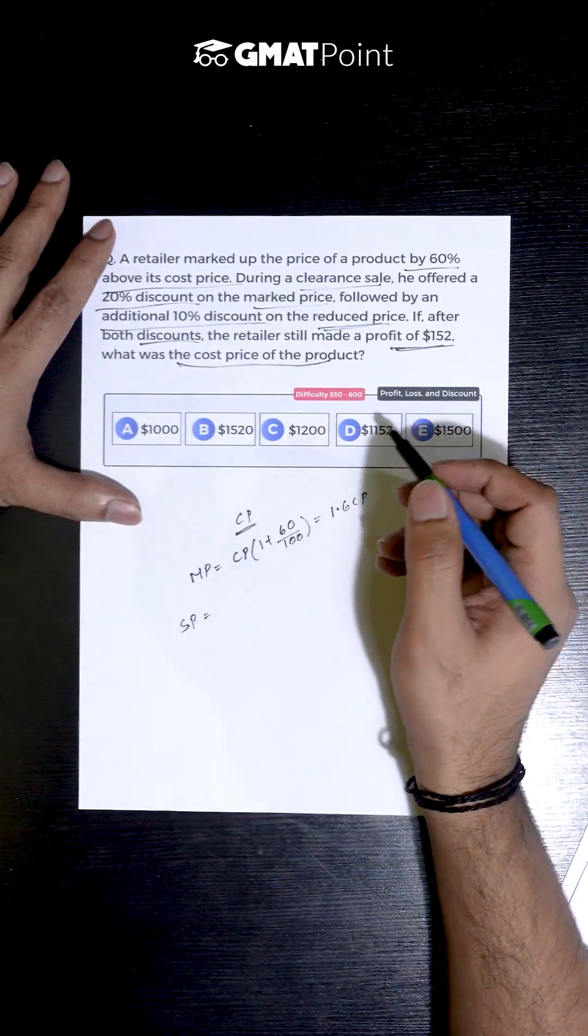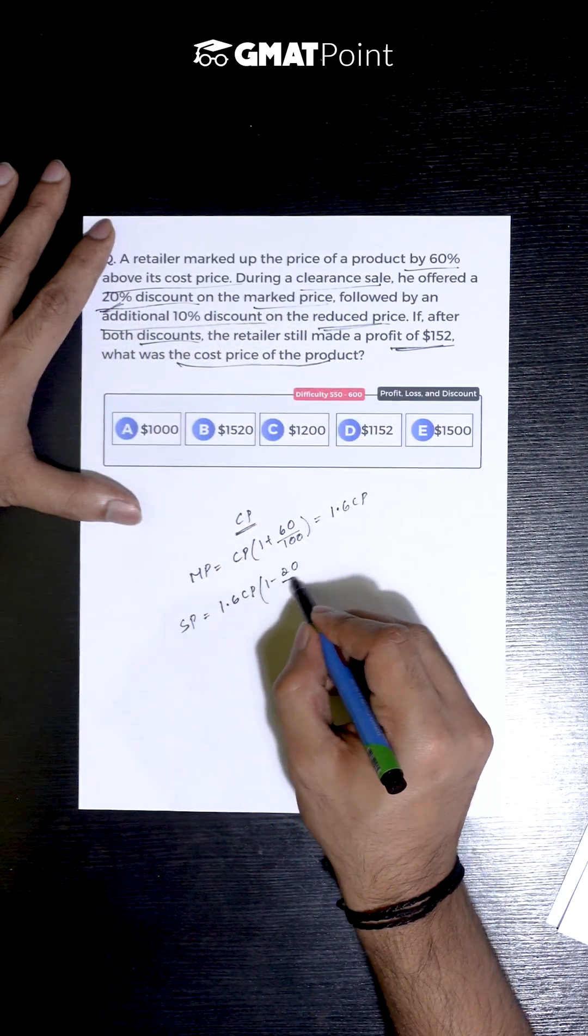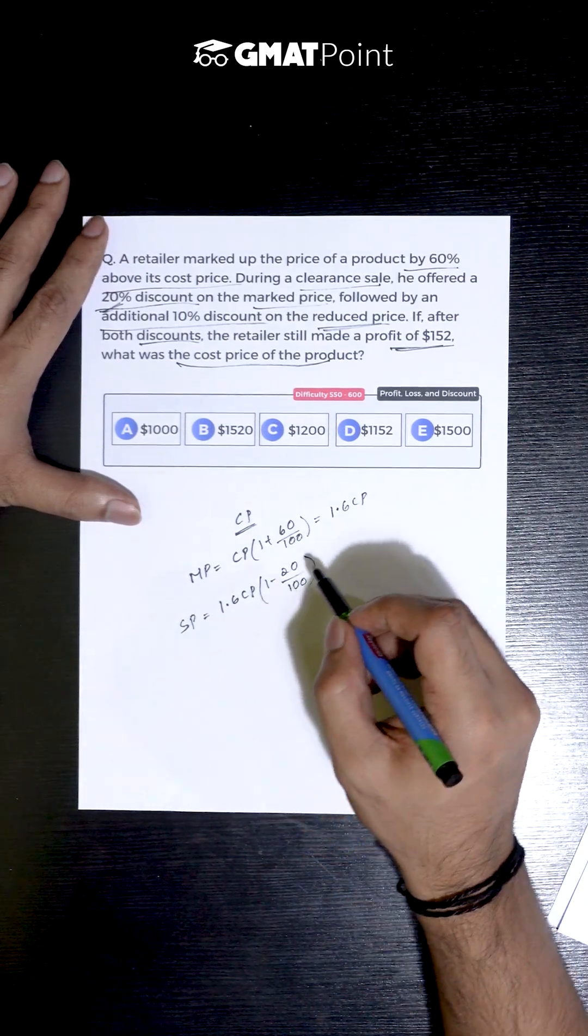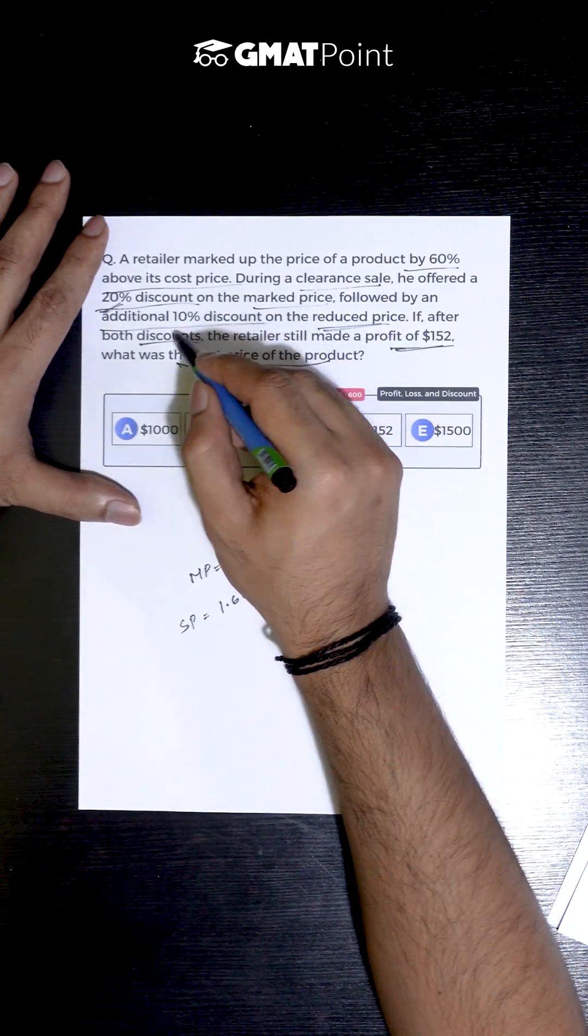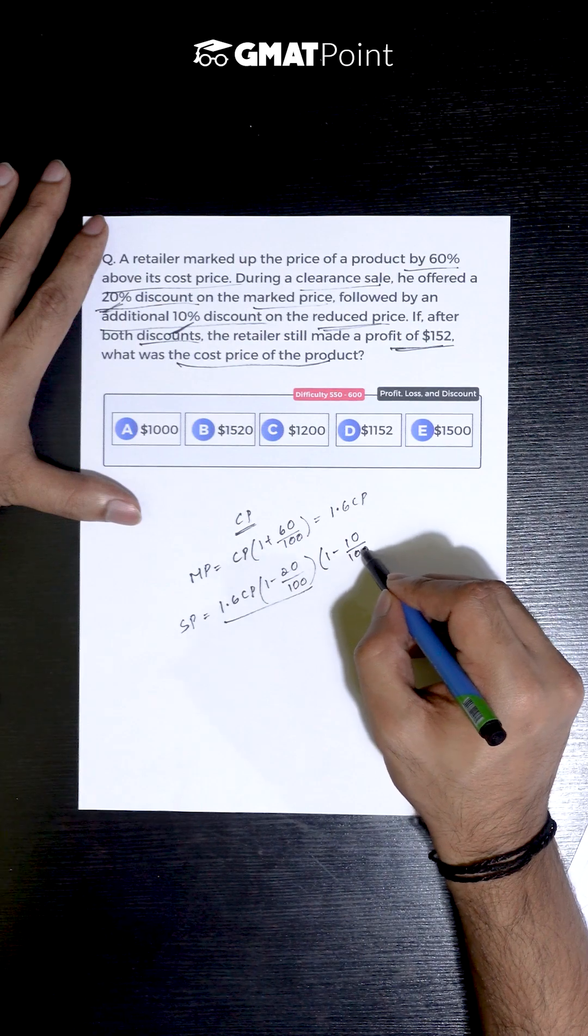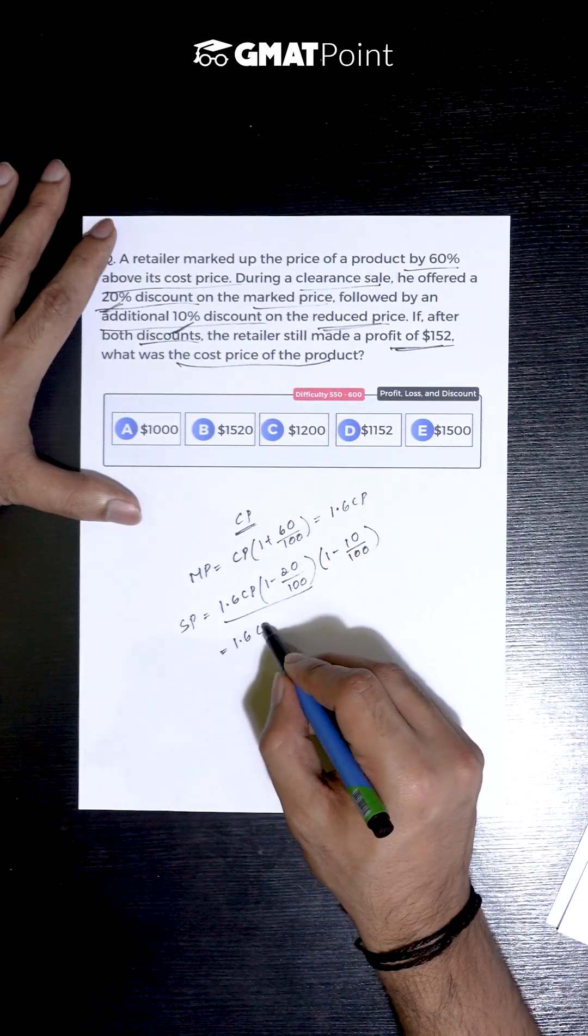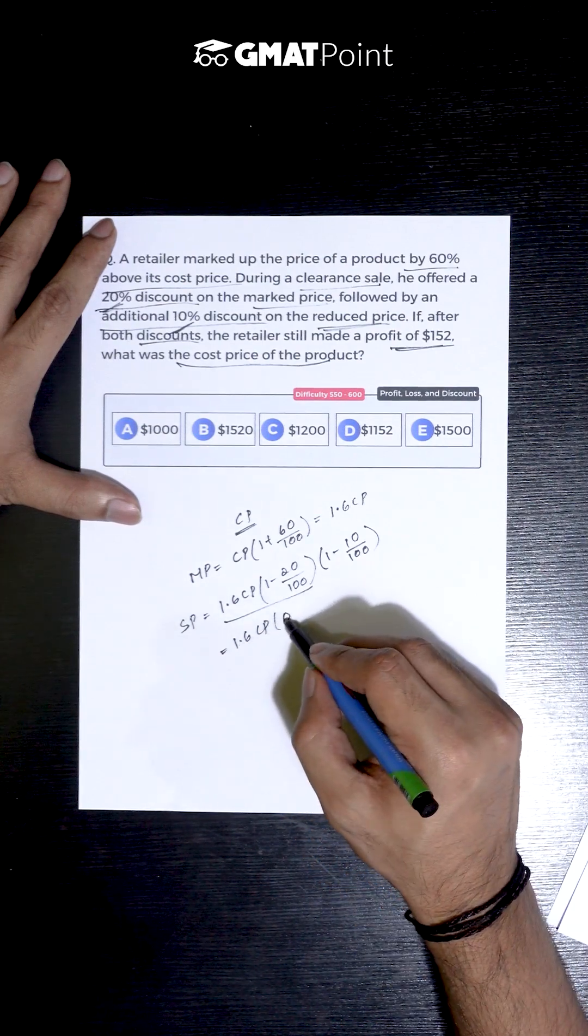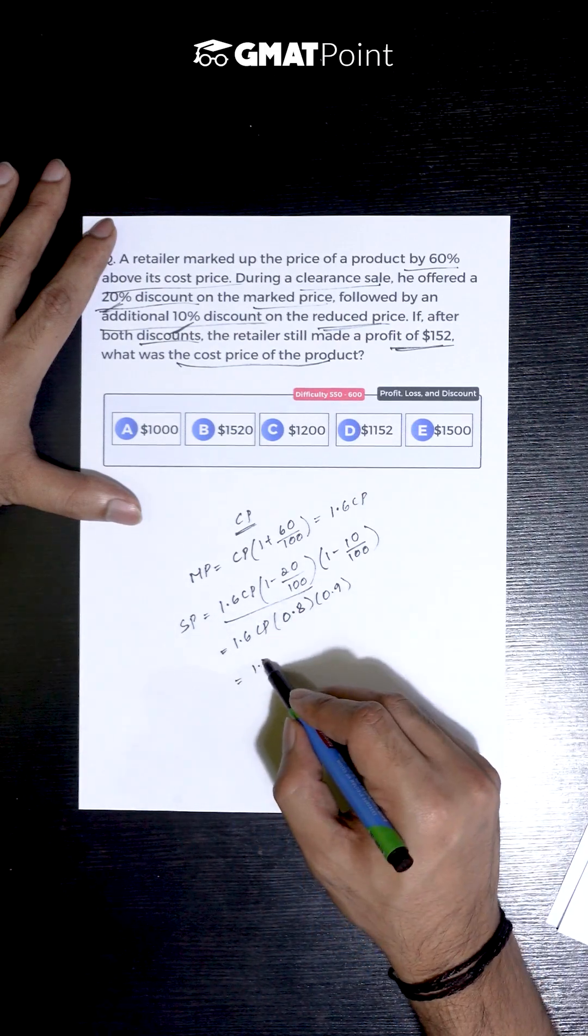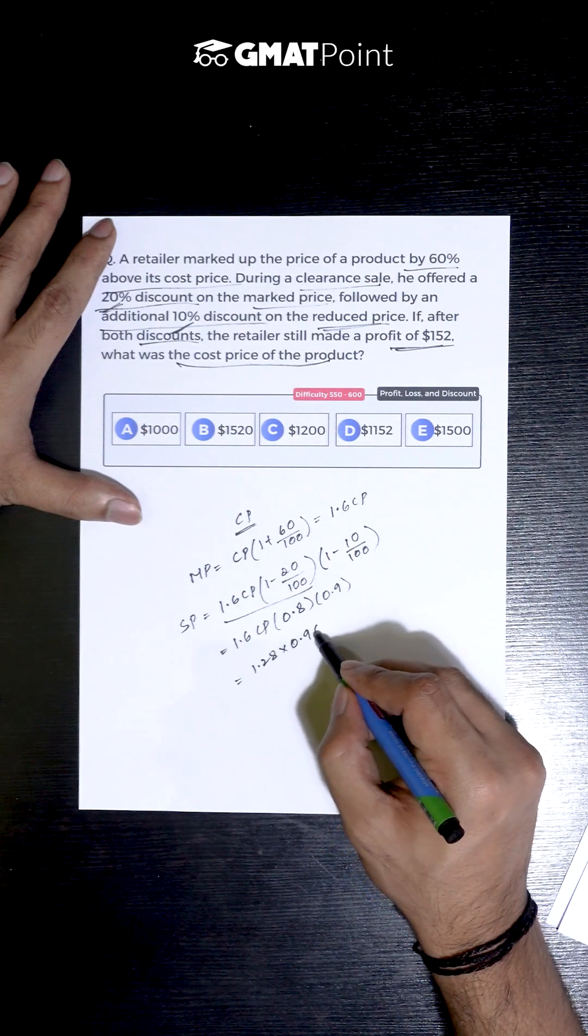Now, during the clearance sale, we are told that he first gave a discount of 20%. Then the selling price becomes 1.6 CP, which is the marked price, times 1 minus 20 by 100. And again, an additional discount of 10% is given on this value. So the final selling price can be calculated by multiplying this value with 1 minus 10 by 100. So the final selling price can be calculated as 1.6 CP times 0.8 times 0.9.